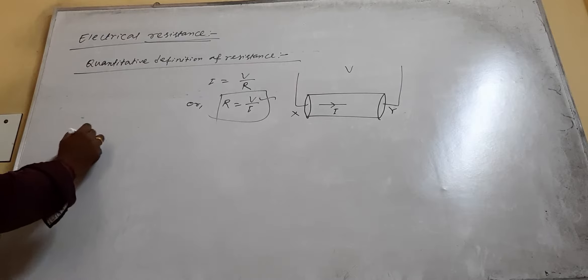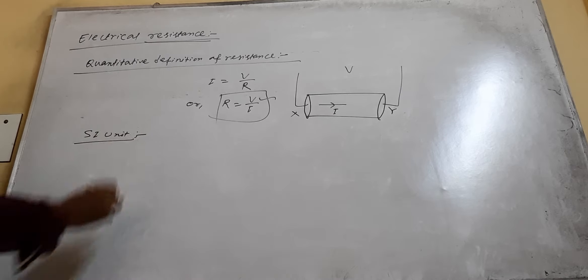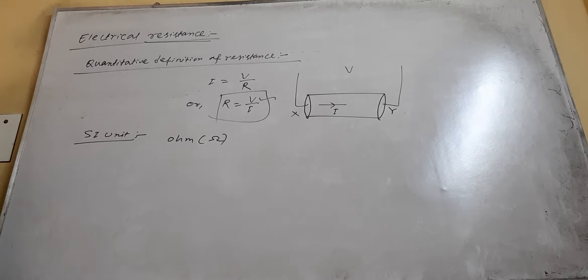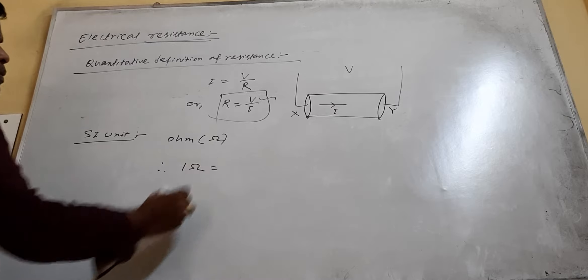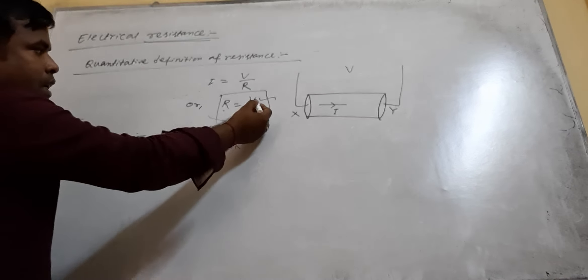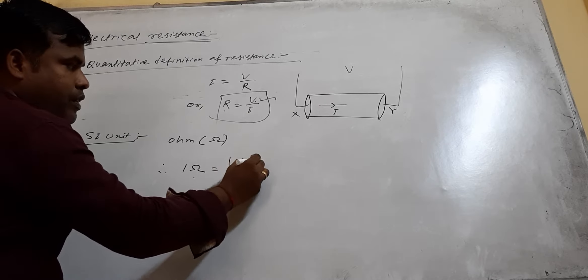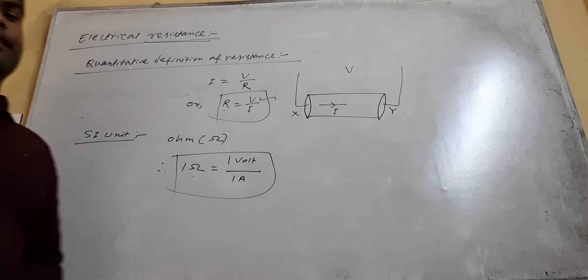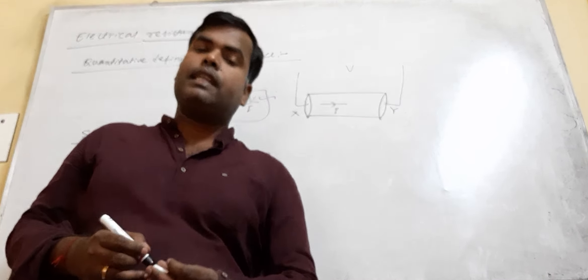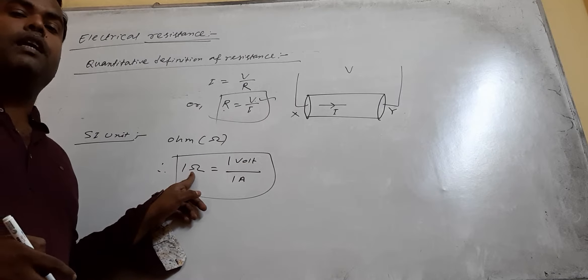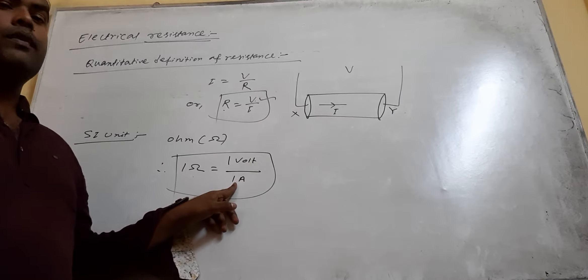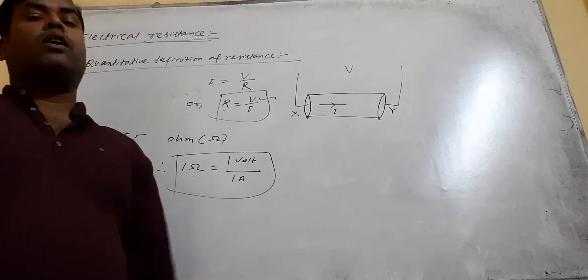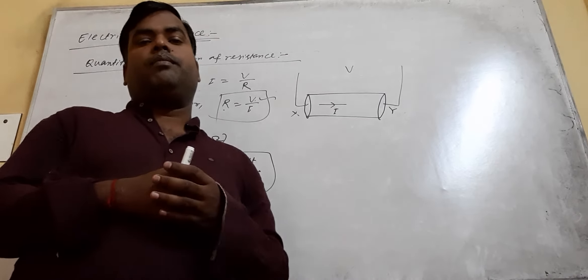Now, what is the SI unit of resistance? The SI unit is Ohm, with symbol Ω. When resistance is in Ohm, potential is in volts and current in ampere. The resistance of a conductor is said to be one Ohm when a current of one ampere flows through it on applying a potential difference of one volt across it.